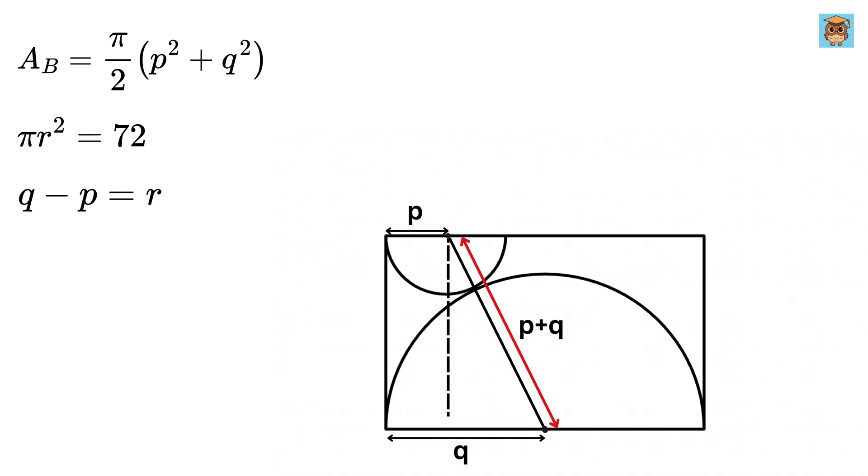Now, draw a vertical line like this. What will be its length? It will be equal to the diameter of this semicircle, or 2 times R. Now, this piece is equal to P, so this will also be equal to P, and this is equal to Q, so this length will be equal to Q minus P, right?